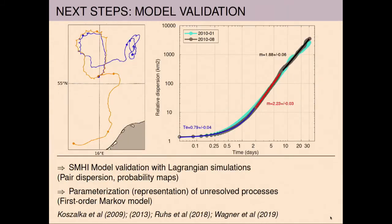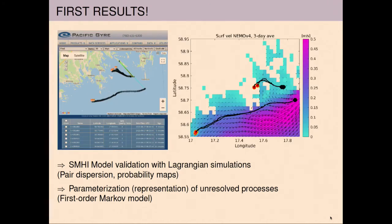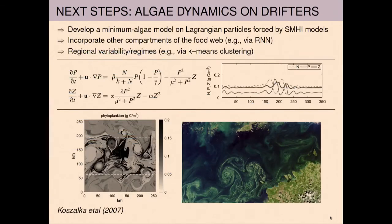I will explain how we are going to incorporate biology as a next step. Every drifter can be thought of as a patch containing some concentration of phytoplankton, zooplankton, and nutrients. Already during my PhD, I studied how this kind of model can be implemented on particles drifting in ocean model currents.